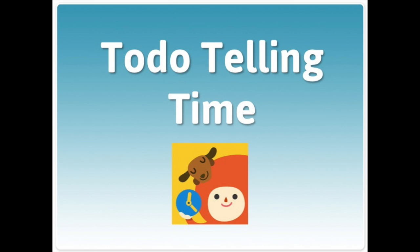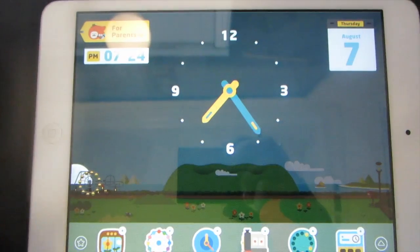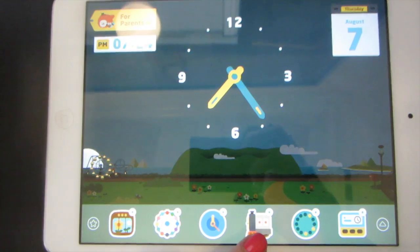This is how to play Toto Telling Time. Tap to open first. The best games for you are the clock game and the train game.